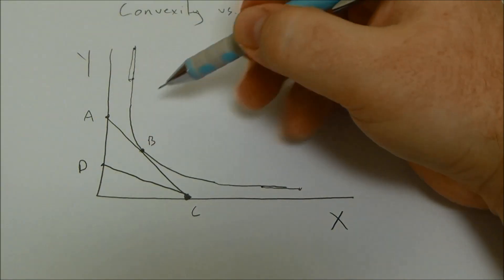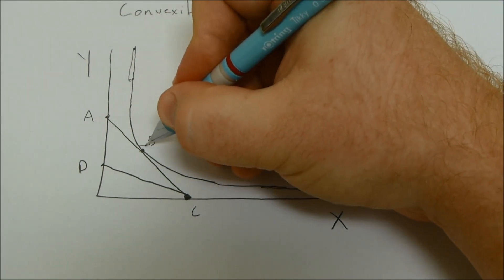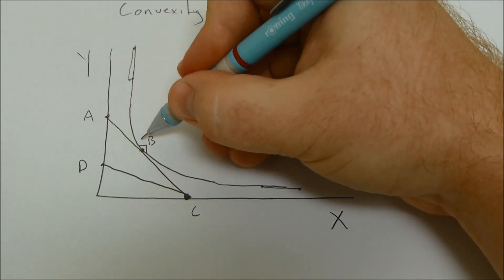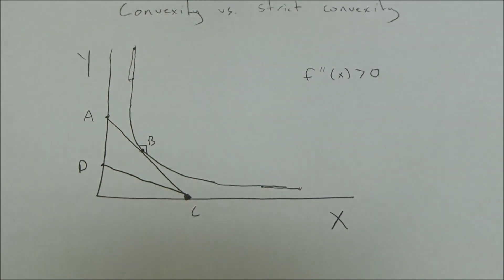But when we're towards the middle and away from the extremes, the trade-off, or the marginal rate of substitution, is much less for both of the goods.